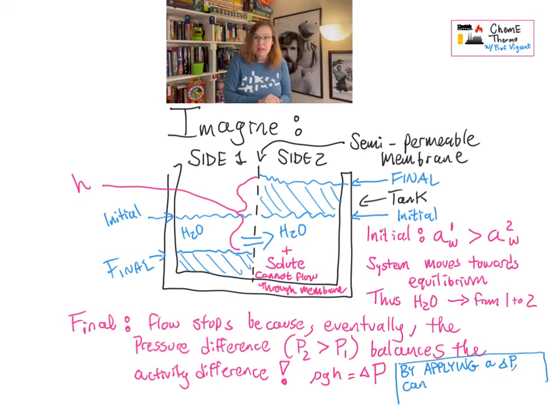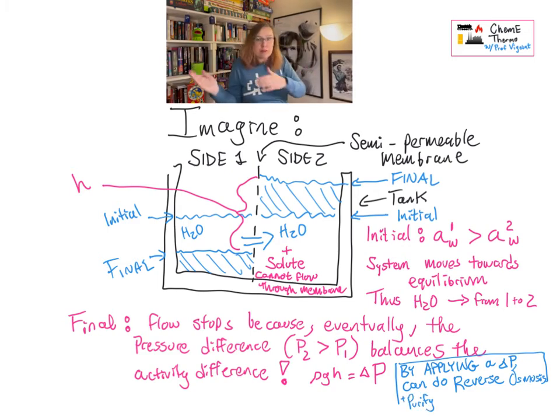But what we think is more useful as engineers is using this process backwards, right? Because this ought to work both ways. We can put pressure on the side with the solutes in it and basically squeeze pure water out through the semi-permeable membrane, as long as the pressure we exert is greater than that that was caused by the activity in the first place. And that's called reverse osmosis. And let's give it a try!